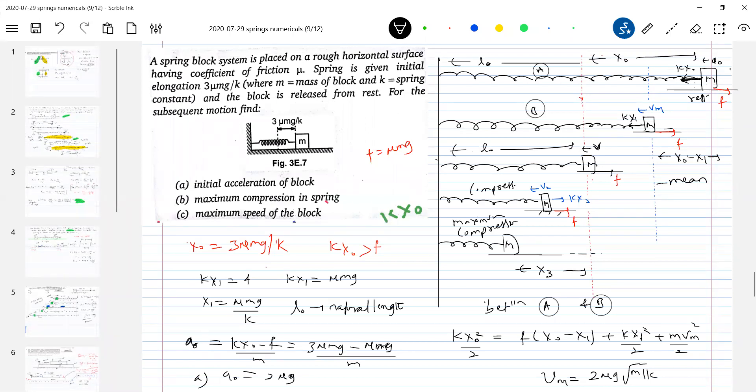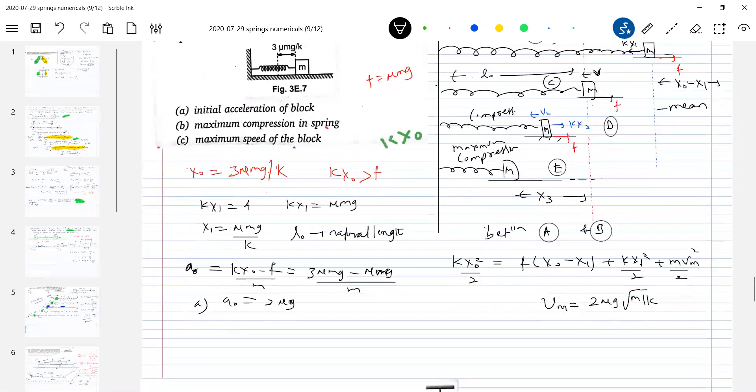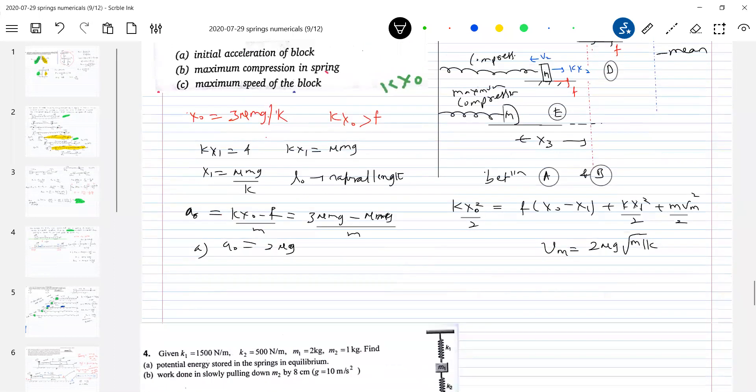X here. There's some elongation. Diagram B is the elongation. C is natural length. D is compression. And what about E? Maximum compression. So between A and D, shall I apply an energy equation? Between A and D.